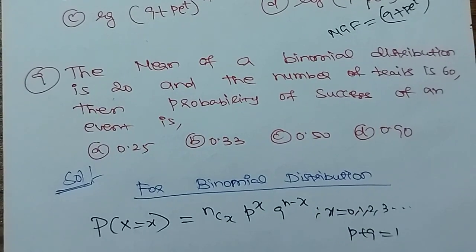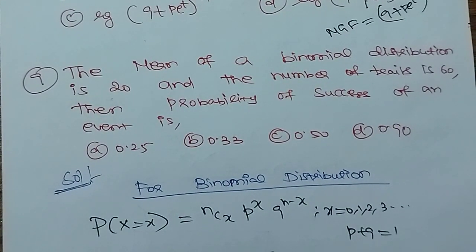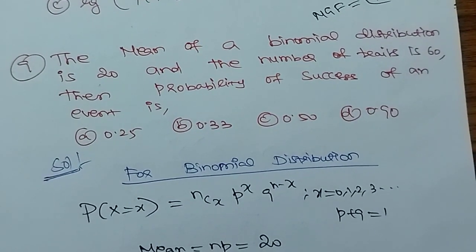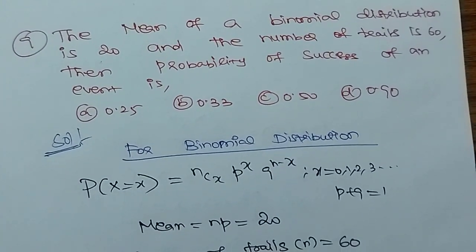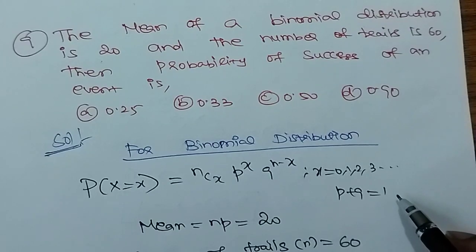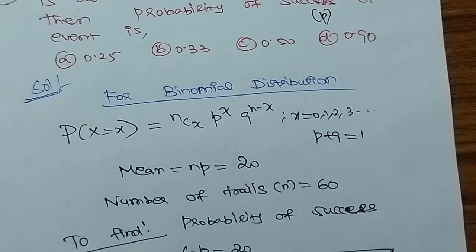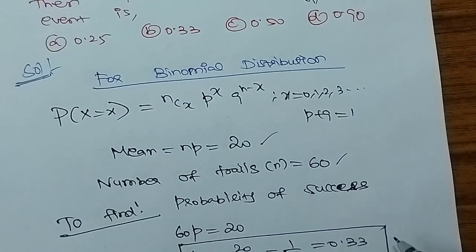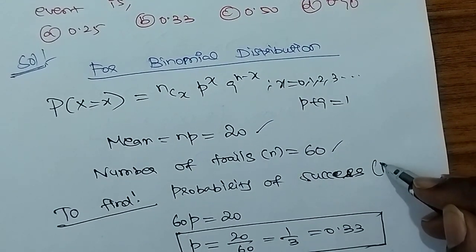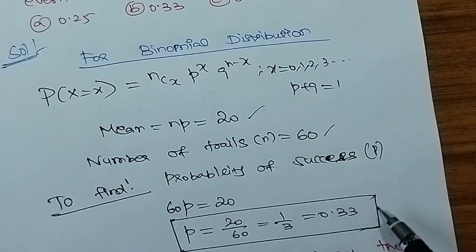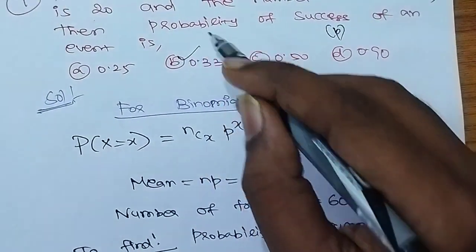The mean of a binomial distribution is 20 and the number of trials is 60. The probability of success of an event is: Option A: 0.25, Option B: 0.33, Option C: 0.50, Option D: 0.90. For binomial distribution, mean = np. Given n = 60, np = 20, so p = 20/60 = 1/3 = 0.33. Option B is correct.